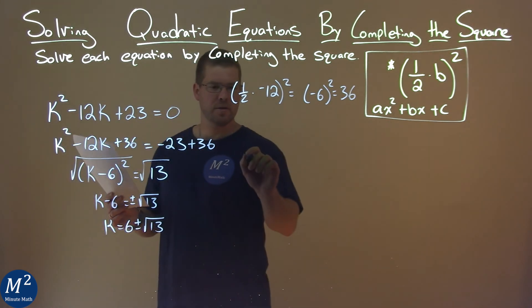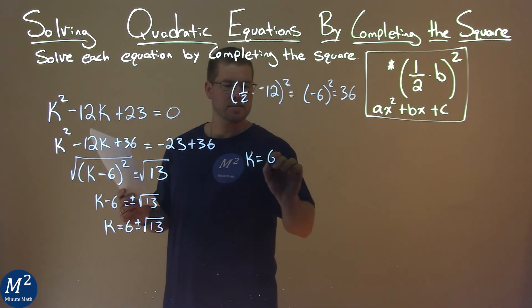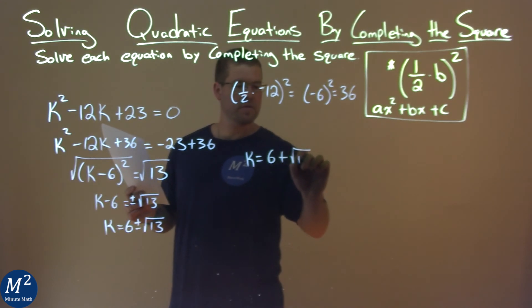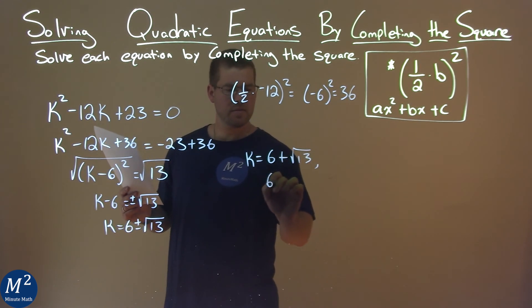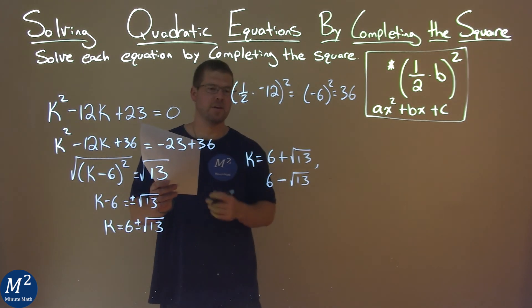So how can we write this individually? So k equals 6 plus square root of 13, and 6 minus the square root of 13. These are our two options, and that is our final answer.